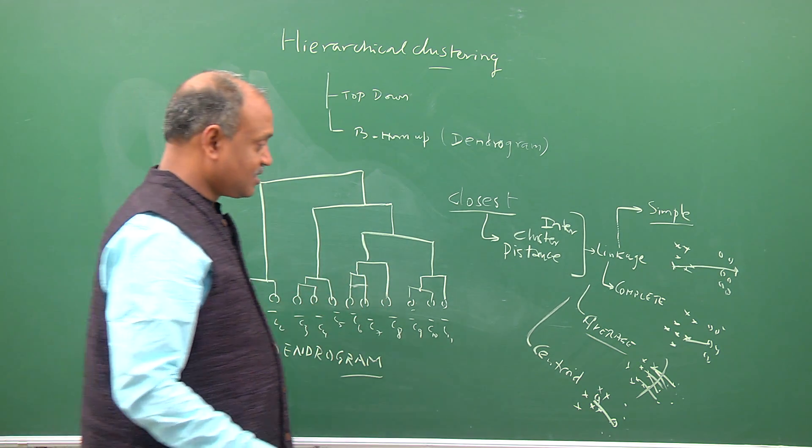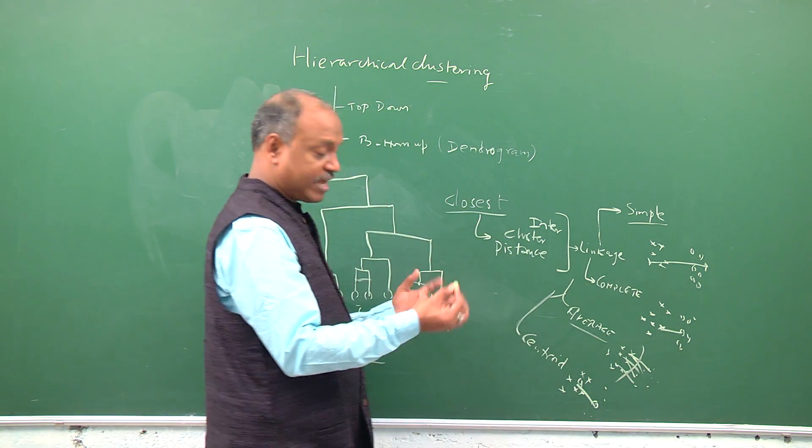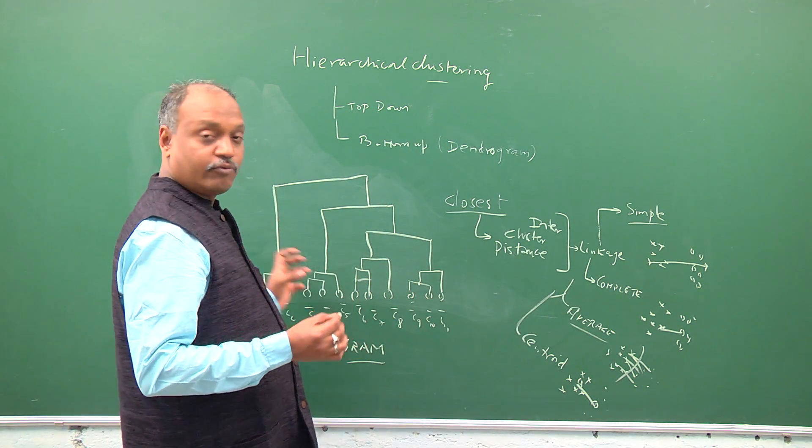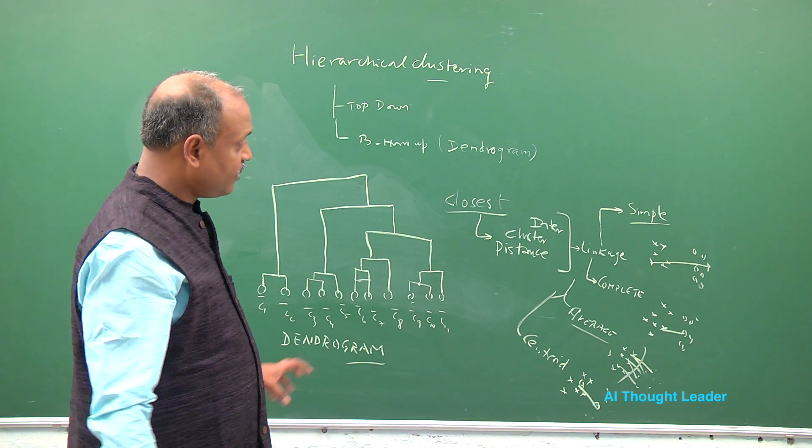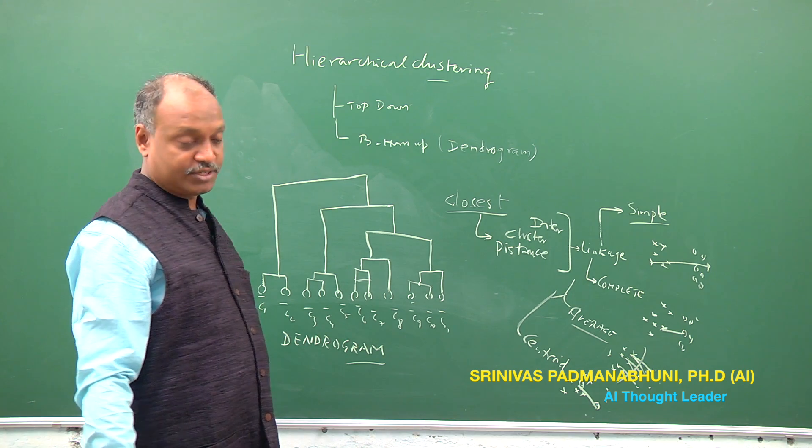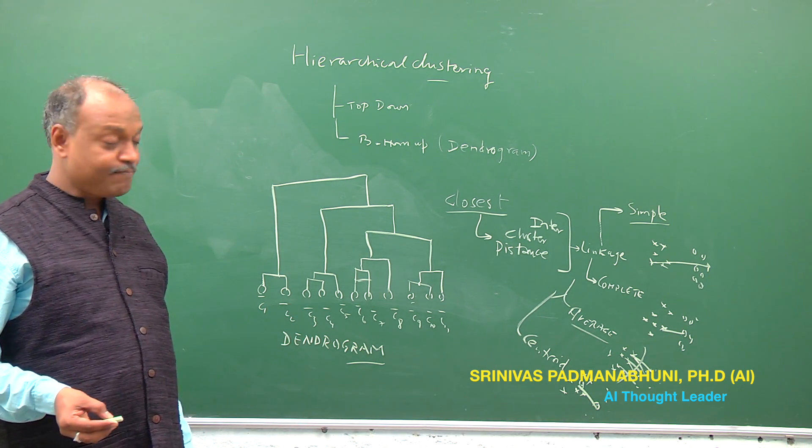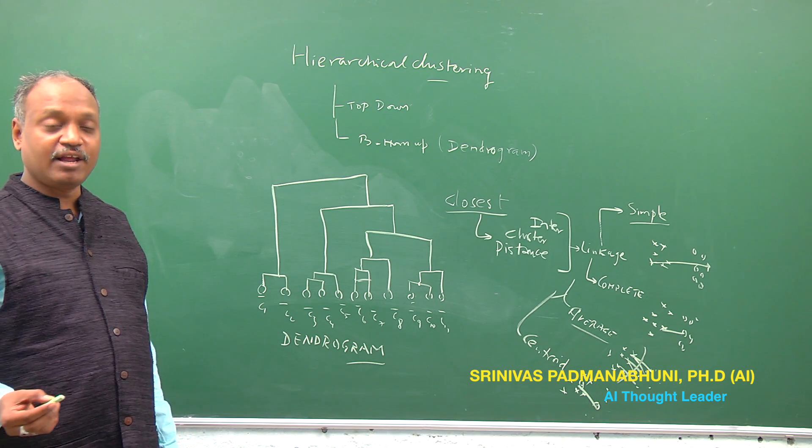But what typically has been observed is complete or average use a good measure in terms of narrow compact form of clusters which are close to each other, whereas simple use slightly spread out and long chain form of clusters.